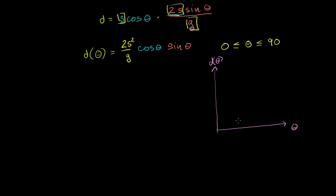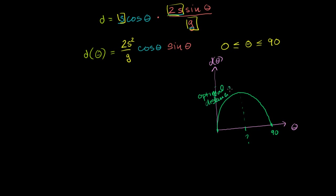We care about angles between 0 and 90 degrees. So if you were to graph this thing, this is 0 degrees and this is maybe 90 degrees right here. The graph of this function will look something like that. What we want to do is find the angle — there's some angle here that gives us the optimal distance. And what happens to the instantaneous slope at that optimal distance? The slope there is 0.